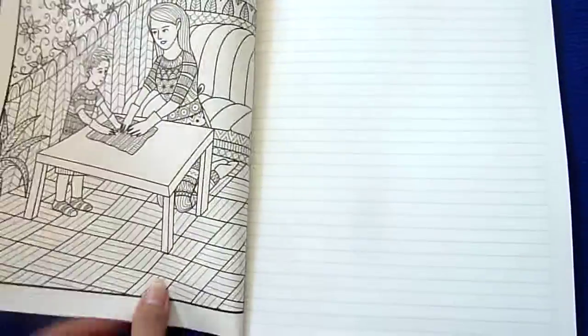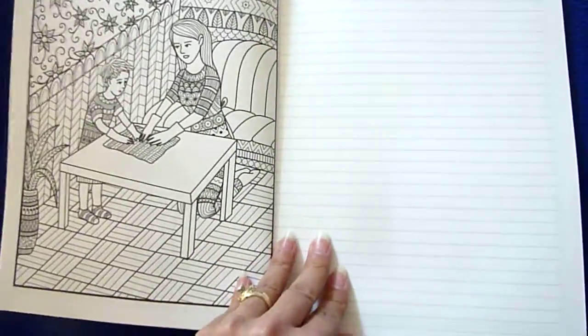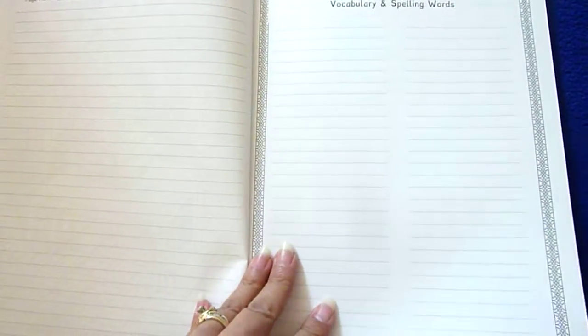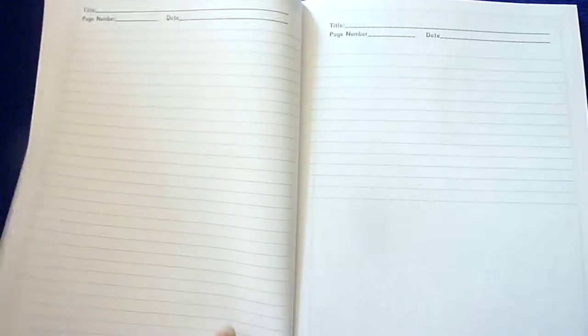This one has some pretty pictures in it to color. So here you have title, page number and date, vocabulary and spelling words, and right here you can add your own illustration and there's some lines right here.